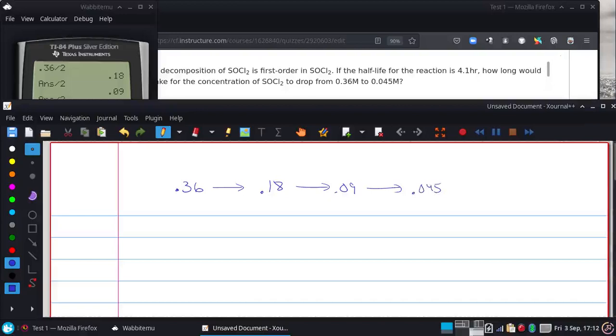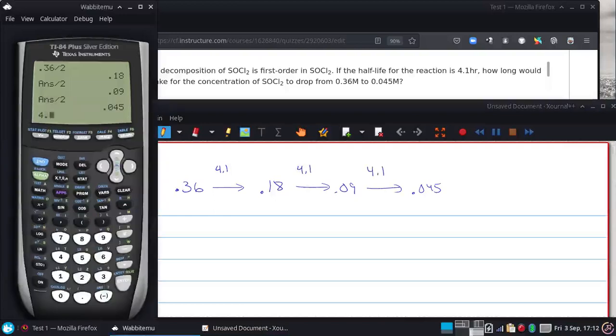is exactly three half-lives from the beginning. And if each half-life is 4.1 hours, this is 4.1 times 3, or 12.3 hours.